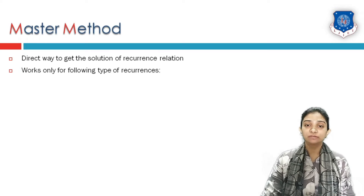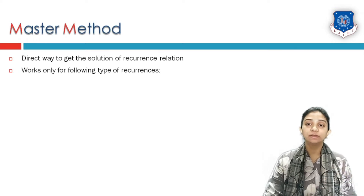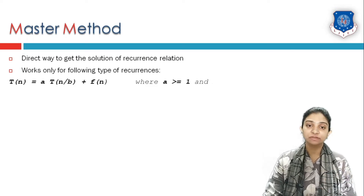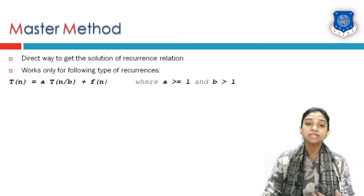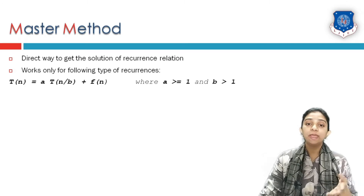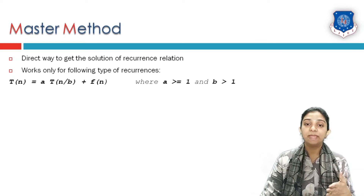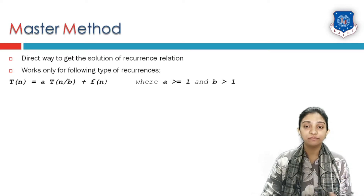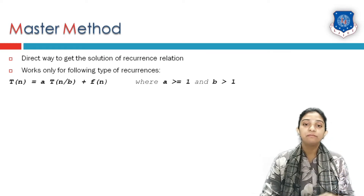The master method works for recurrence equations of the following form: T(n) = a·T(n/b) + f(n), where a is a coefficient greater than or equal to 1 and b is always greater than 1.